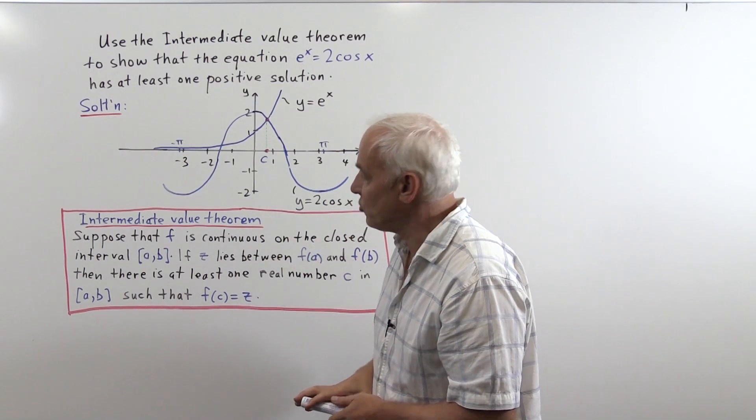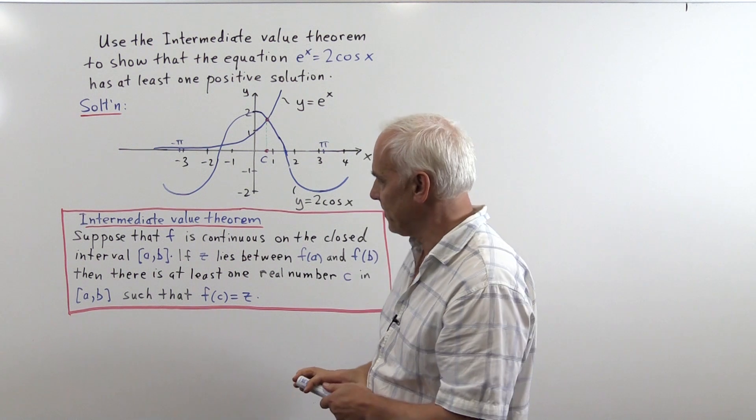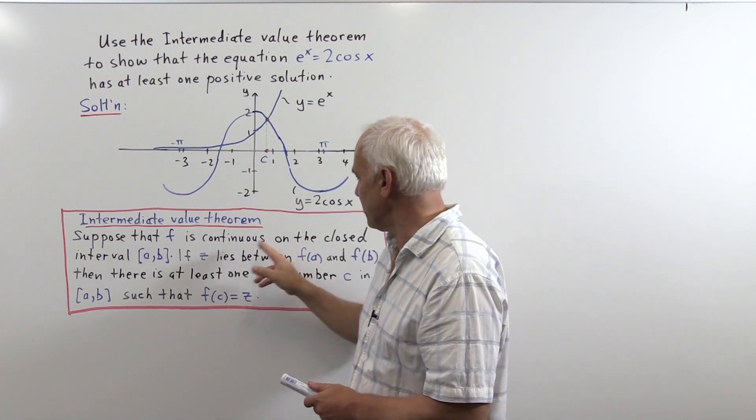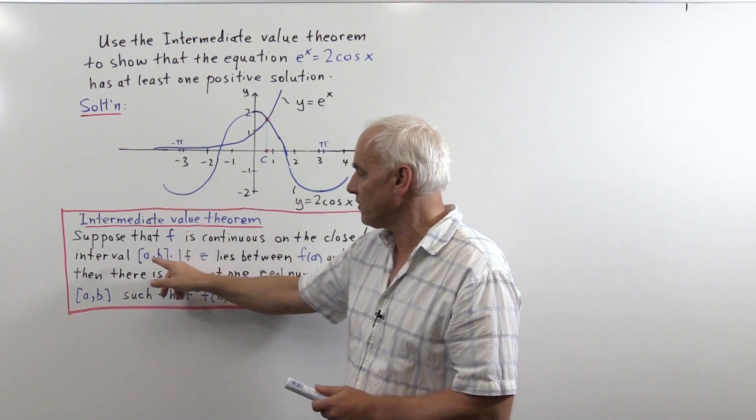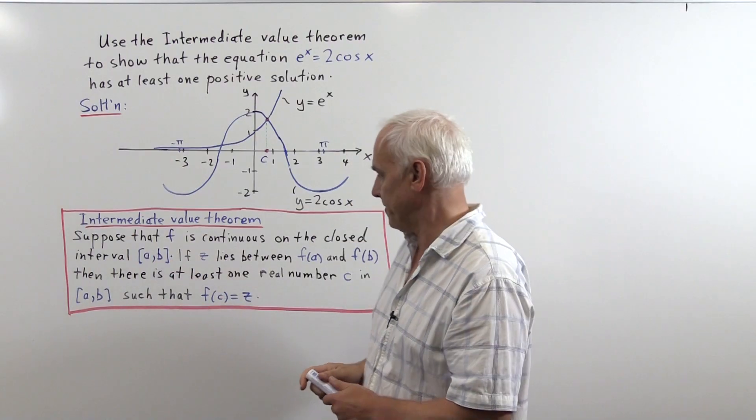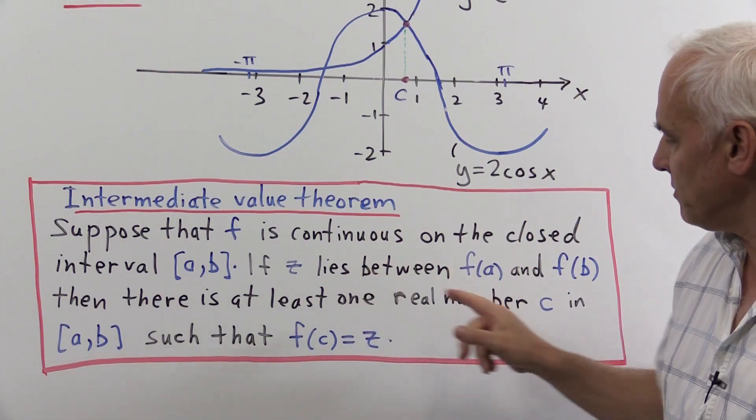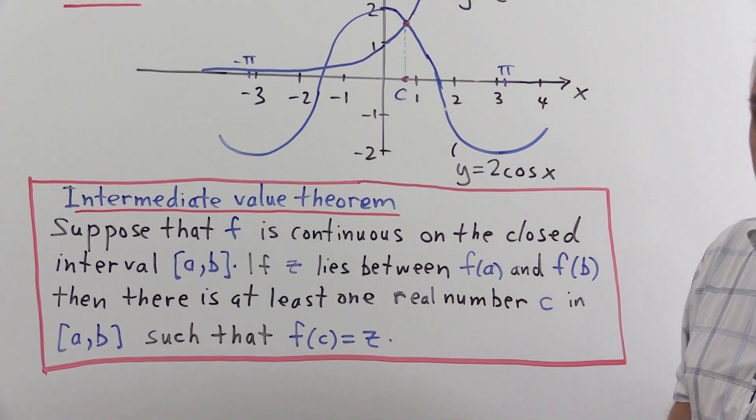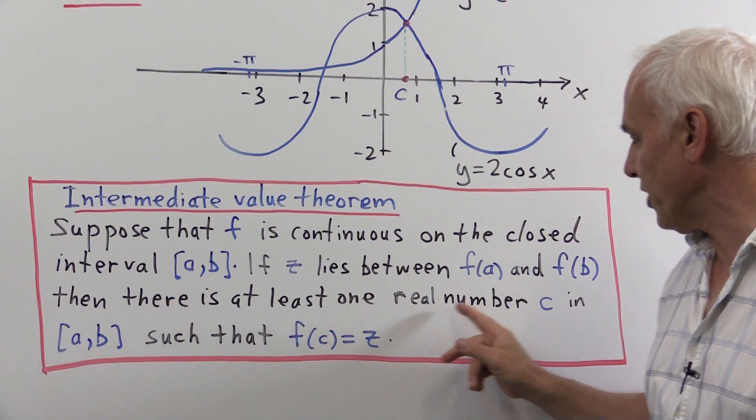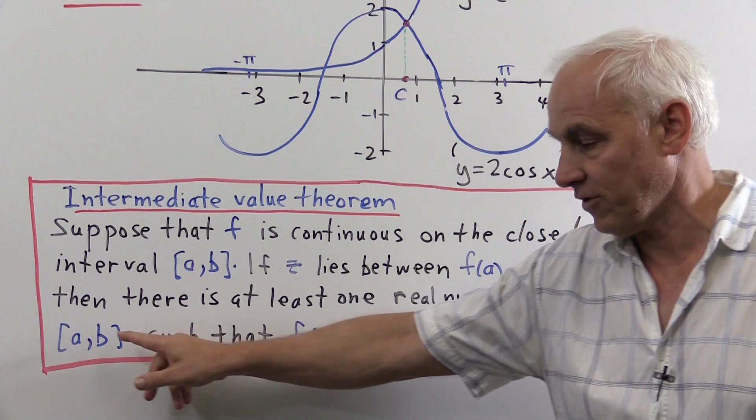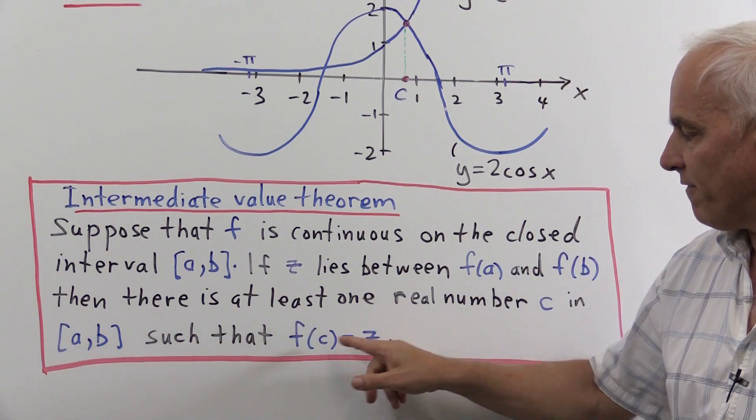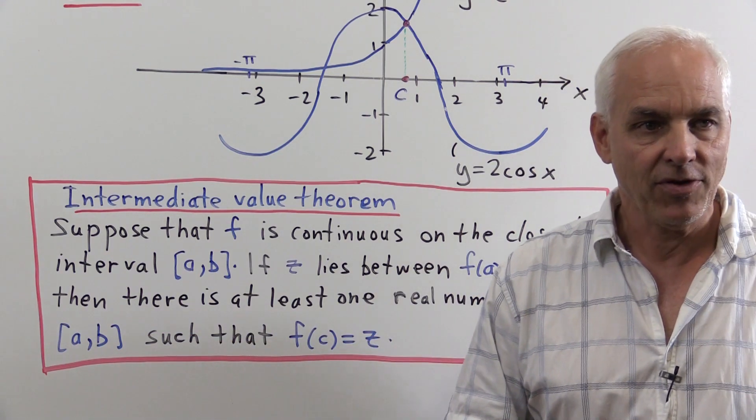Now I remind you about the Intermediate Value Theorem. Here's the statement: Suppose that f is a continuous function on the closed interval [a, b]. If z lies between f(a) and f(b), then there is at least one real number c in the interval [a, b] such that f(c) = z.